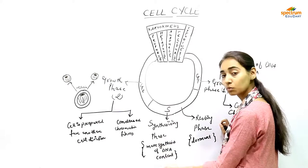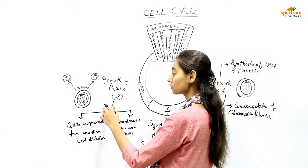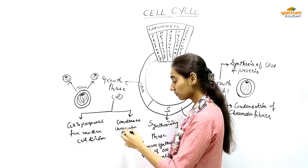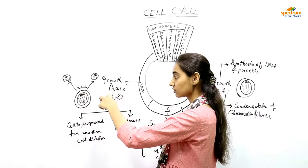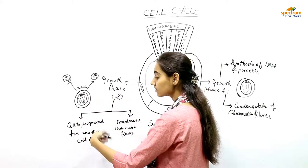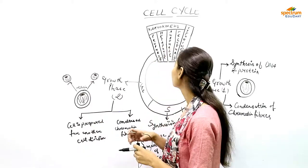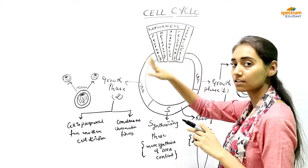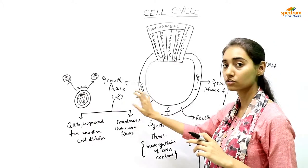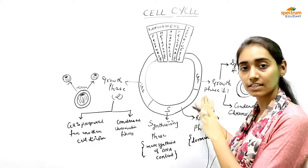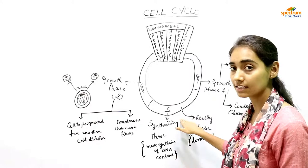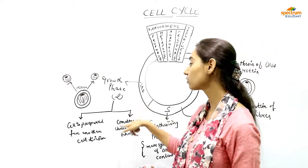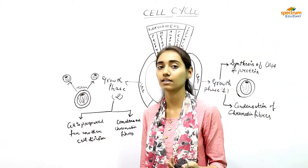After undergoing the synthesizing phase with more DNA content and protein, in growth phase 2, the chromatin fibers are condensed to form chromatids which will undergo the next cell division — mitosis. The cell is now prepared for the next division. To summarize: the cell cycle has three phases — G1, S, and G2. In G1, condensation takes place; before S phase the cell may or may not enter a resting phase; in S phase more DNA is synthesized; and in G2 the cell is prepared for another cell division.